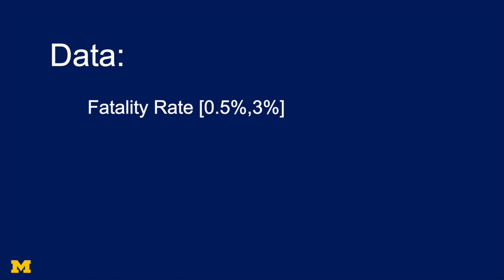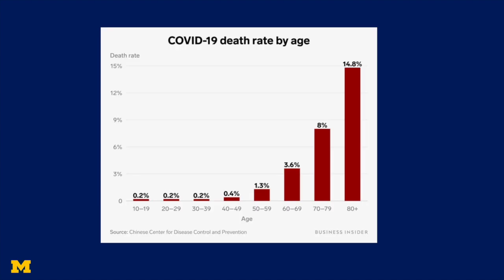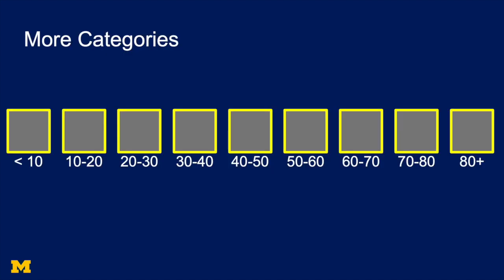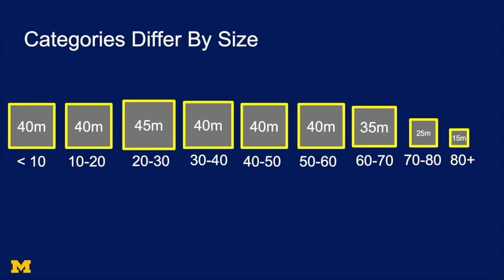The fatality rate, when you look at the data, is between half a percent and 3% in aggregate. But if we look at the data on fatality rates from China, we see huge differences by age. And if we look at early data from the United States, we see a similar pattern. This means we want to take our model and construct more categories — instead of having everyone in one big box, we want to break people into categories by age. These categories differ by size, so there are many fewer people older than 80 than in the 20 to 30 age group, and we have to take that into account.